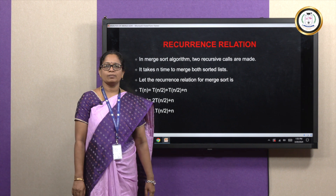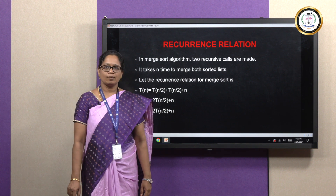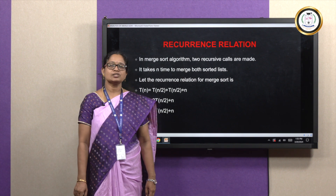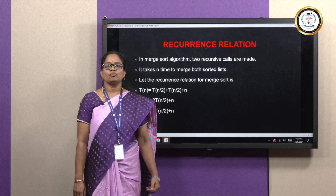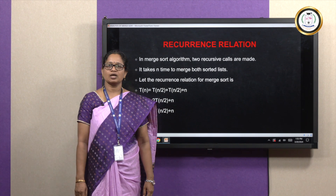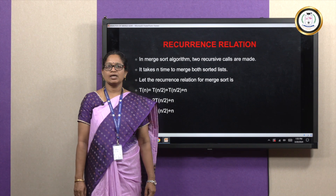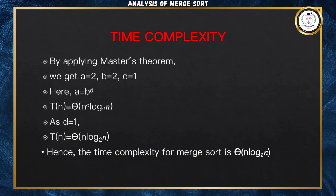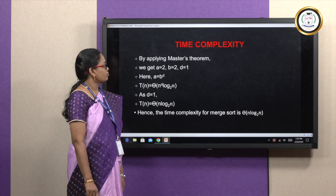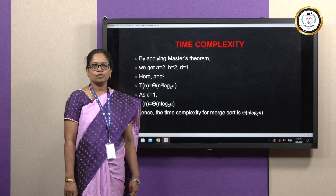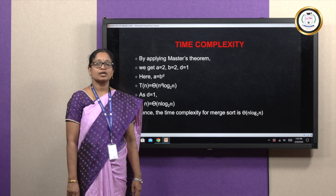This is of the form A·T(n/B) + F(n), which is the master's theorem. We are solving this recurrence relation according to the master's method. According to master's method, A equals 2, B equals 2, and D is the power of n, which is equal to 1 here. We are comparing A and B to the power D. The values are the same — A equals B to the power D — which comes under case 2.